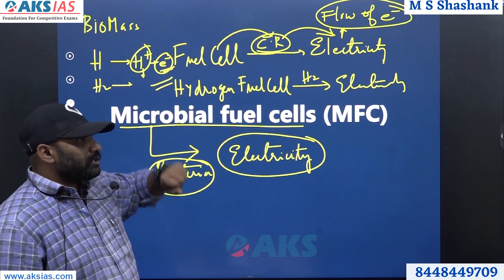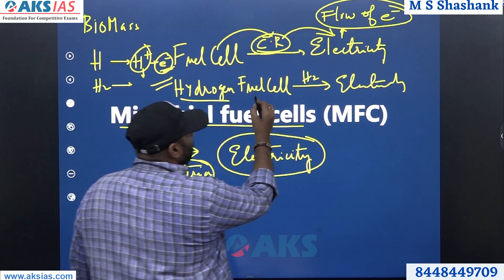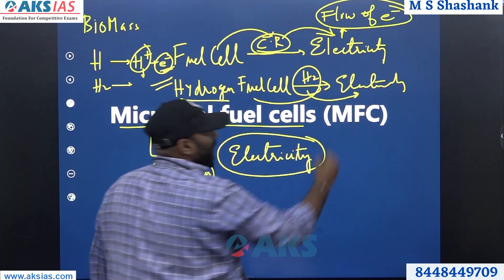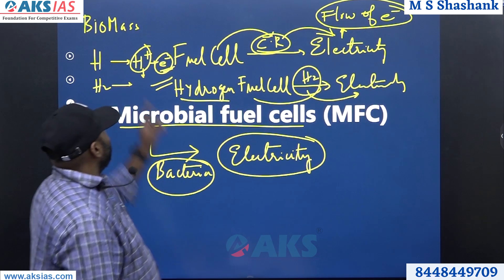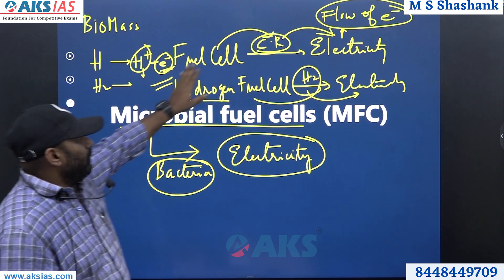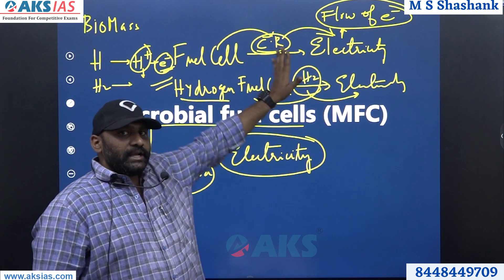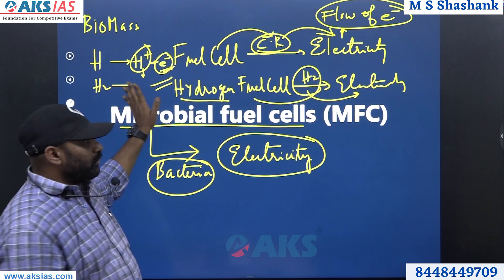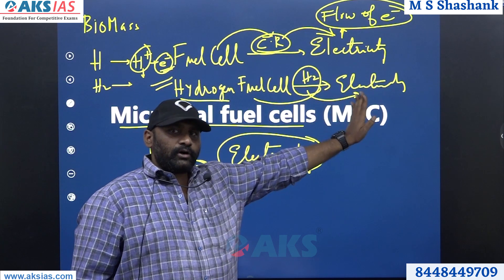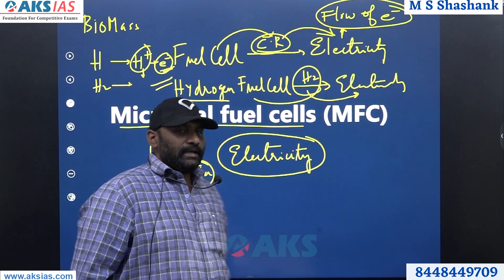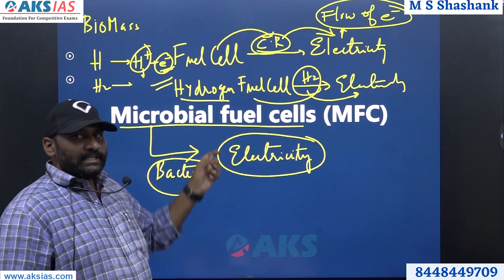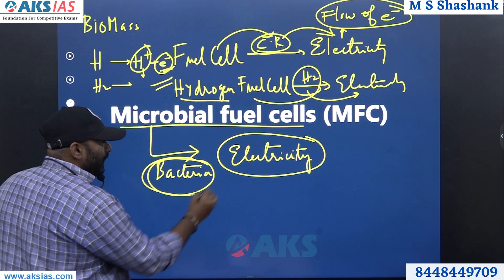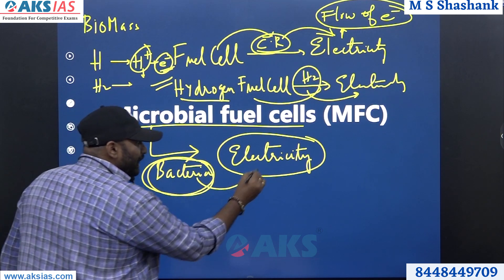What about a hydrogen fuel cell? A hydrogen fuel cell uses hydrogen — break the hydrogen, generate electricity. So: fuel cell → chemical reaction → heat → electrons → electricity. Hydrogen fuel → hydrogen breakup → electrons → electricity. But microbial fuel cells — the advantage is it uses bacteria to generate electricity.